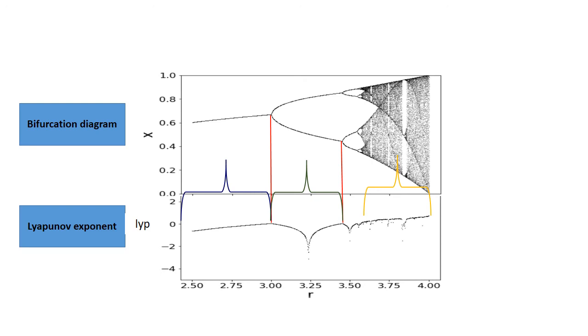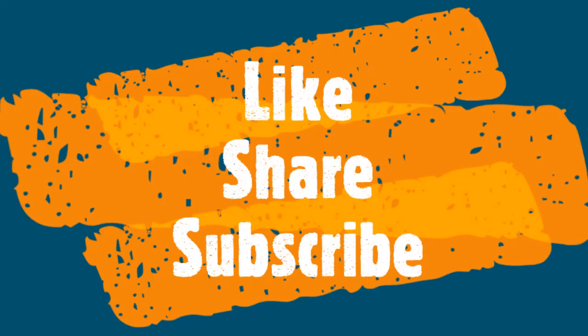We can infer that both the bifurcation diagram and the Lyapunov exponent reflect the same aspects of the chaotic map. Thank you for watching.